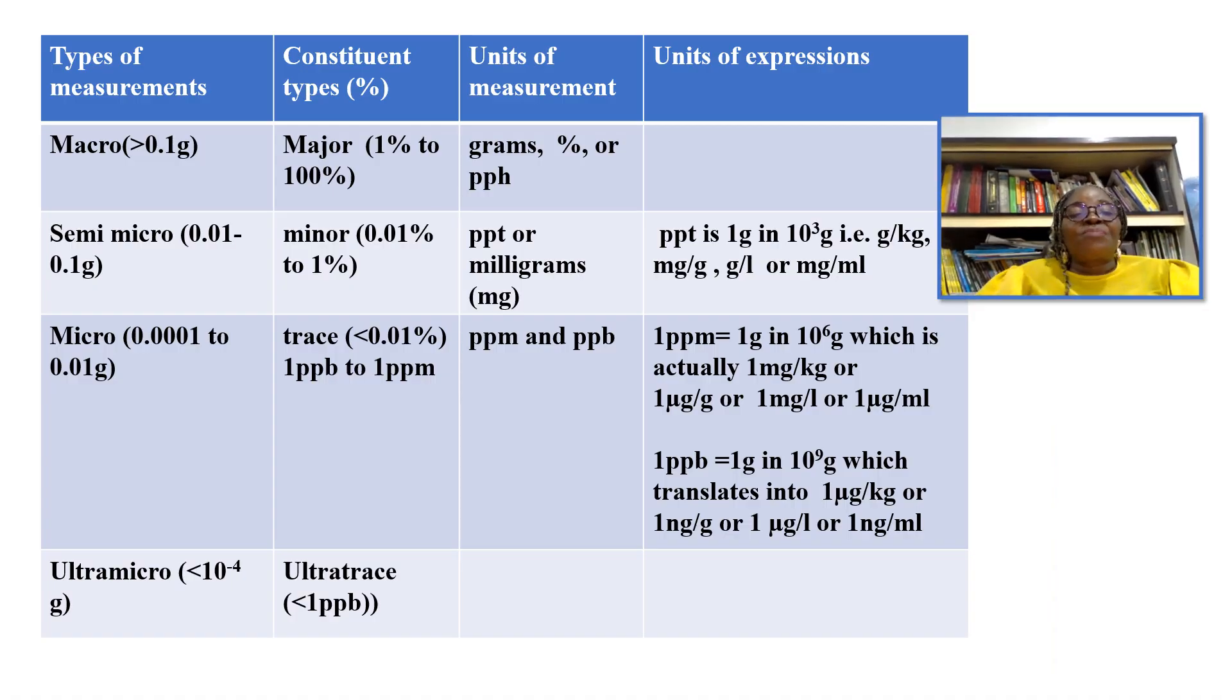We are looking at types of measurement, constituent types, units of measurement, and units of expression. There are different types of measurement: macro measurement where we measure materials greater than 0.1 gram, semi-micro 0.01 to 0.1 gram, micro 0.0001 to 0.01 gram, and ultra-micro where we measure materials less than 10 to the minus 4 grams.